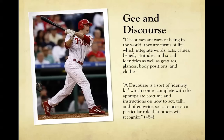Now I'll further complicate this by talking about Discourse with a capital D, using James Paul Gee and an example of baseball. James Paul Gee says that Discourses — capital D — are ways of being in the world. They are forms of life which integrate words, acts, values, beliefs, attitudes, and social identities, as well as gestures, glances, body positions, and clothes. A Discourse is a sort of identity kit which comes complete with the appropriate costume and instructions on how to act, talk, and often write so as to take on a particular role that others will recognize.